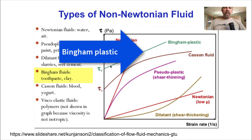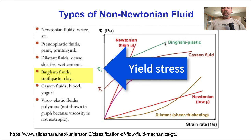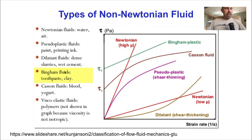Another example of a non-Newtonian fluid with a finite shear stress is a Bingham plastic. Once it's overcome its yield stress tau b here, then its shear rate to shear stress relationship is linear. Toothpaste and clay are examples of Bingham plastics.